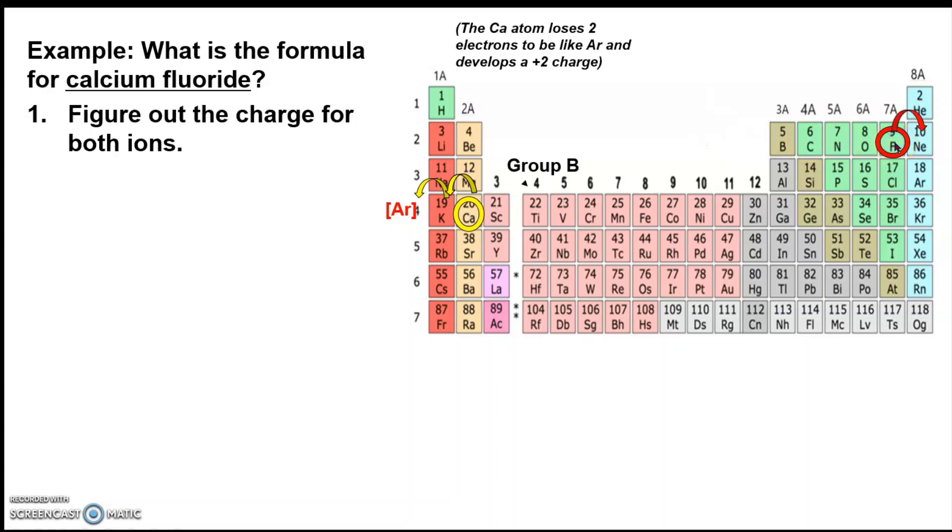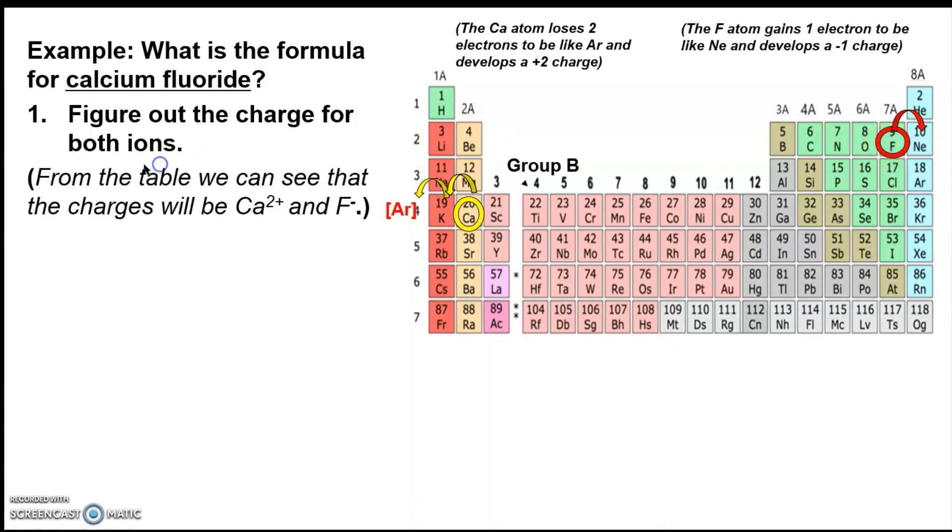Over here, the fluorine is going to become fluoride. It's going to become like neon. And it's going to develop a negative one charge. So just sort of a summary here, calcium plus two and fluoride is minus one. The next step, and a lot of times this is the last step, crisscross the numbers. Now, what that means is just write both of these out here with the charge and then do what is called the crisscross method. That goes there, that number goes there, and that number goes there, and you end up with, that's the correct answer, CaF2.